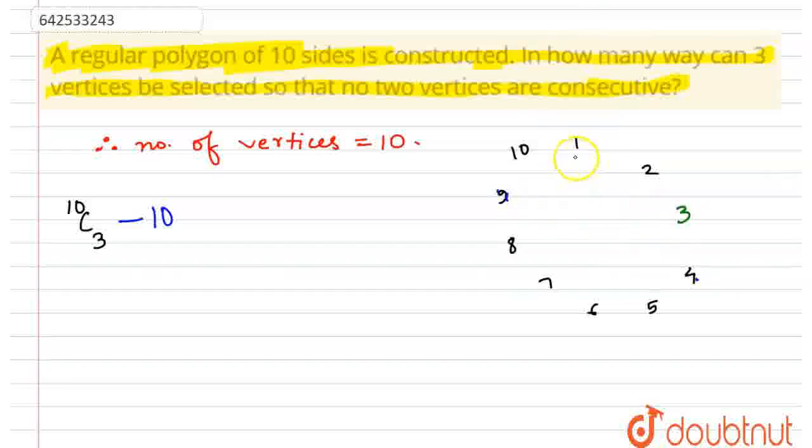Now suppose the 2 vertices which are consecutive - they can be 1, 2, or 2, 3, or 3, 4, something like this. So starting from 1, there's a pair, then 2, 3, and then 9, 10, and then 10, 1. So there are basically 10 choices for consecutive vertices.